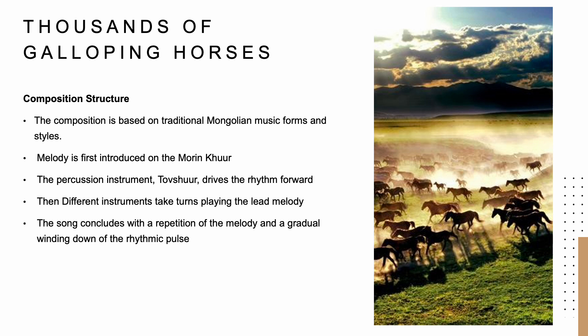The composition of this music is based on traditional Mongolian music forms and styles. The song begins by introducing a melody on the morin khuur, with a lively and flowing character that reflects the movements of horses in motion. The melody repeats with variations throughout the piece. Then the tofshur is played, which drives the rhythm forward and adds to the overall energy of the piece. Its rhythm varies throughout the song, with moments of intensity and moments of rest. Different instruments take turns playing the lead melody, showcasing the unique sound of each and adding to the overall texture and complexity of the music. The music finally concludes with a repetition of the melody and a gradual winding down of the rhythmic pulse, bringing the piece to a peaceful close.